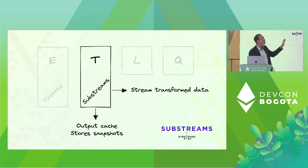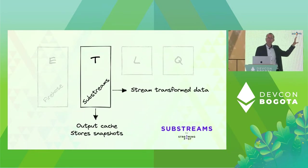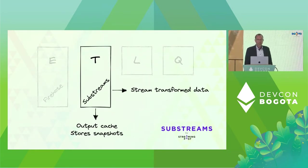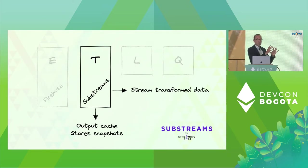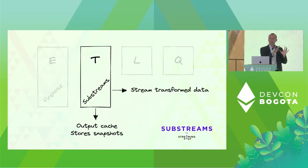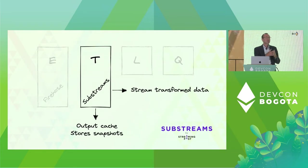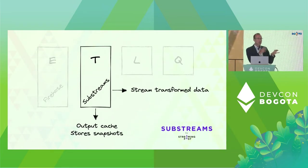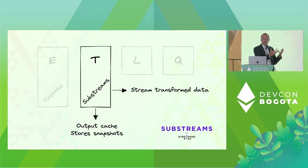Substreams is a rethinking of the second box — the transformation layer. Here, instead of the traditional subgraph handlers and AssemblyScript, you will write Substreams modules in Rust. And those can be executed in real time as well as in parallel with unprecedented performance.